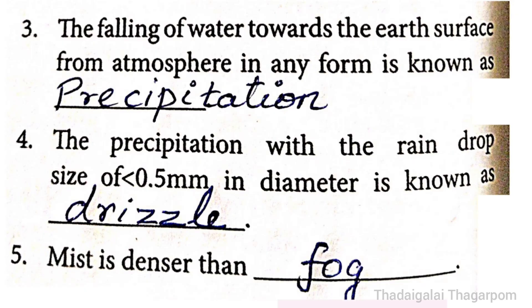4th one: The precipitation with the raindrop size of less than 0.5 mm in diameter is known as — The answer is Drizzle. The precipitation with the raindrop size of less than 0.5 mm in diameter is known as Drizzle. 5th one: Mist is denser than — The answer is Fog. Mist is denser than Fog.